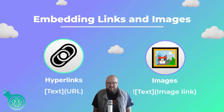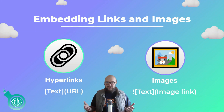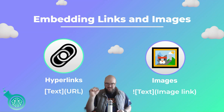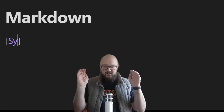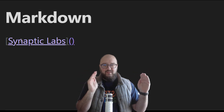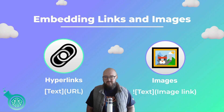Next is embedding — this is one I had fun with early on for ChatGPT. These are how you create hyperlinks and attach images in markdown format. For hyperlinks, if you want text like 'Synaptic Labs' to be a hyperlink, you put those words in square brackets and then in normal parentheses you put the full URL, and this turns into a hyperlink.